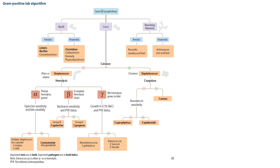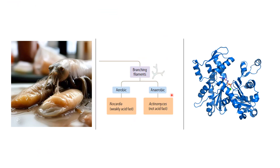Next we move to branching filaments, which again have aerobic and anaerobic categories. For Actinomyces, I remember it as 'actin' — a protein — so it's anaerobic. For the aerobic side, Nocardia sounds like 'no cardio.' Someone with no cardio still has some aerobic capacity, so Nocardia is aerobic but not very much. This also helps remember that Nocardia is weakly acid fast — not very fast, just a little bit.